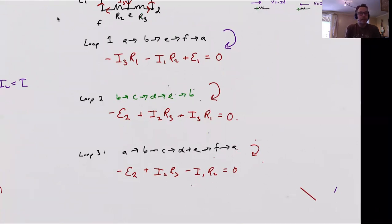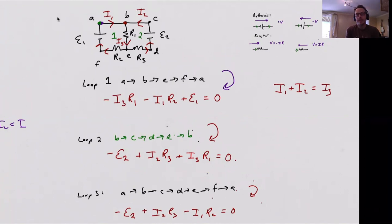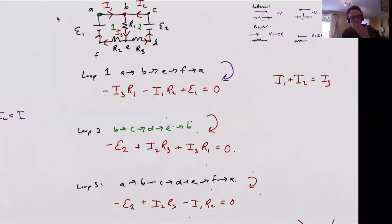There is one other equation that has to be true: since we had a junction, the current flowing into a junction must equal the current flowing out. At junction B: I1 flows in, I2 flows in, I3 flows out — so I1 plus I2 equals I3. At junction E: I3 flows in, I1 and I2 flow out — same formula. So from this circuit we generated four equations total that link everything together.